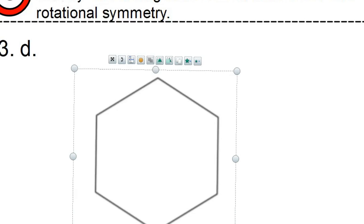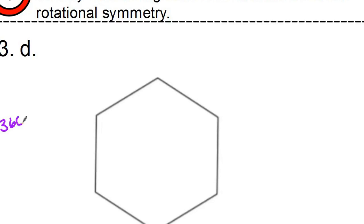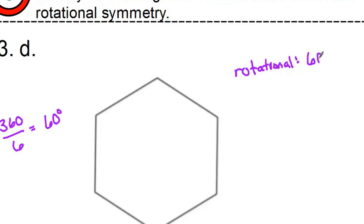So I could rotate this six times. So if I do 360 divided by six, that's going to give me 60 degrees. So that is a rotational symmetry of 60 degrees.